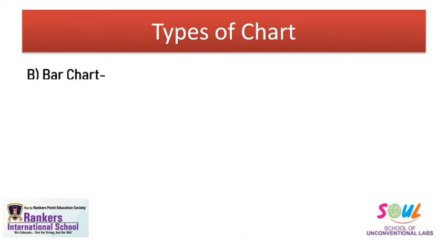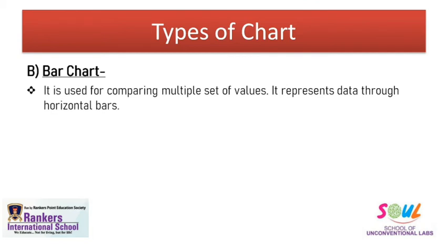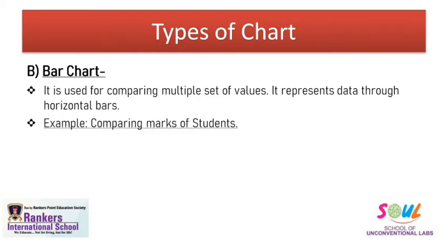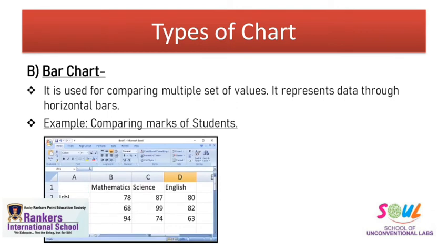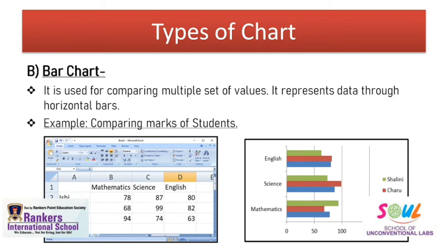The second category is bar chart. It is used for comparing multiple sets of values and represents the data through horizontal bars. Bar chart and column chart are similar — the only difference is that bar chart uses horizontal slices. For example, suppose we want to compare the same students' marks from the same data sheet. You can create a bar chart where the values go along the horizontal axis and the categories go along the vertical axis, so the slices are horizontal instead of vertical.